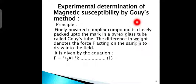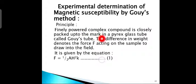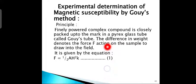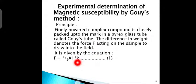Experimental determination of magnetic susceptibility by the Guise method. The principle: finely powdered complex compound is closely packed into a pyrex glass tube called a Guise tube. The difference in weight denotes the force F acting on the sample to draw it into the field. The force is given by F = ½H²k (equation 1). F = ½H²(k − k′) (equation 2), where k′ is the volume susceptibility of air. Then F = ½H²(k − k′) + δ (equation 3).